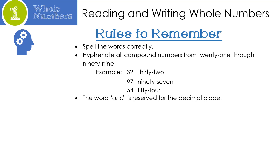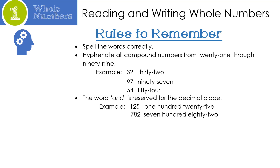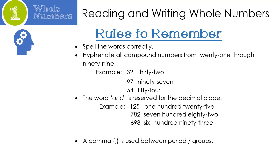We also have to remember that the word "and" is reserved for the decimal place. So let's look at this number: 525. I know a lot of us will say "five hundred and twenty-five," but that's wrong — don't put the "and" in there. It's only for the decimal place. Let's look at another example: 782, written as seven hundred eighty-two. And our last one: 693, written as six hundred ninety-three. Lastly, I hope you noticed that we use a comma between the period or groups. So let's look: 3,213 — notice the comma between the thousands and the ones place. And 26,741.